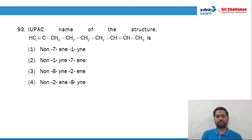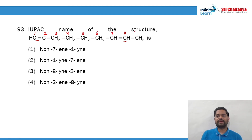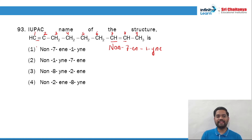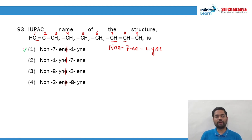Question 93: IUPAC name of the given structure — triple bond at the first carbon, double bond at the second carbon. The longest chain: 1, 2, 3, 4, 5, 6, 7, 8, 9 carbons. So the right answer is non-7-en-1-yne. The 'e' before 'yne' should be removed. Question 93, option number 1.